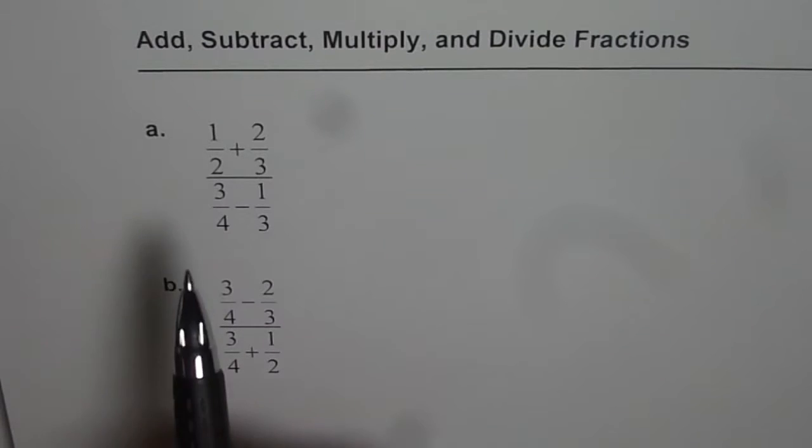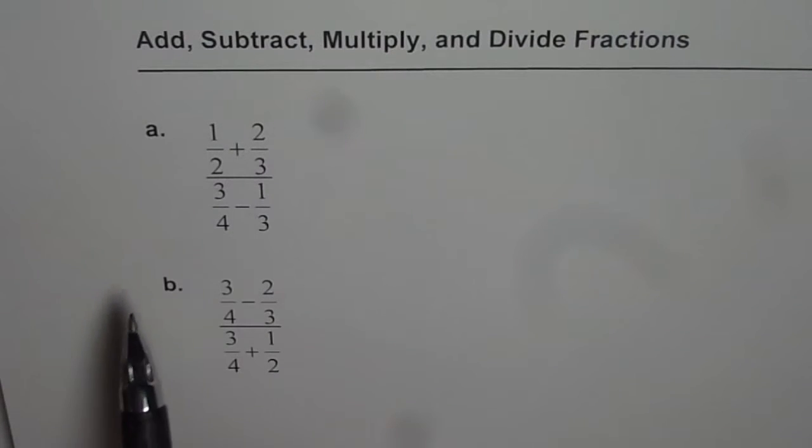Part A is 1 over 2 plus 2 over 3 divided by 3 over 4 minus 1 over 3. And part B is 3 over 4 minus 2 over 3 divided by 3 over 4 plus 1 over 2.